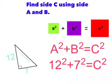First, we are going to start off by writing our equation, which is A² + B² = C². Then we take out A² and B², and we put in 12² and 7² equals C².